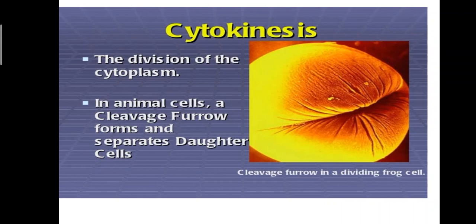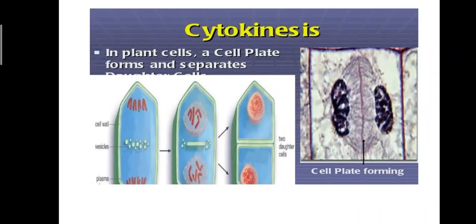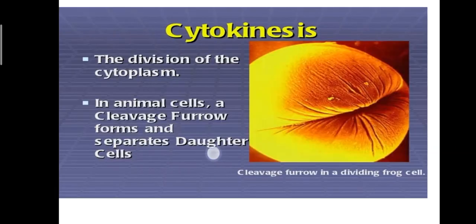Then next step in the mitosis cell division, that is cytokinesis. The division of the cytoplasm takes place. In animal cells, a cleavage furrow forms and separates daughter cells. In plant cells, a cell plate forms and separates.